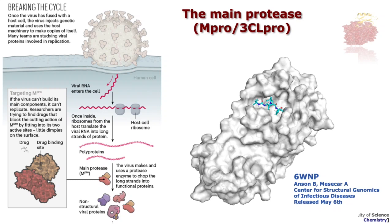There are quite a number of structures of the main protease already available — homologous proteins from SARS-CoV-1 — and recently the structural biology community has been working a lot on those systems. Here you see a structure released on the 6th of May, which is a crystal structure of the main protease with an inhibitor bound to it.